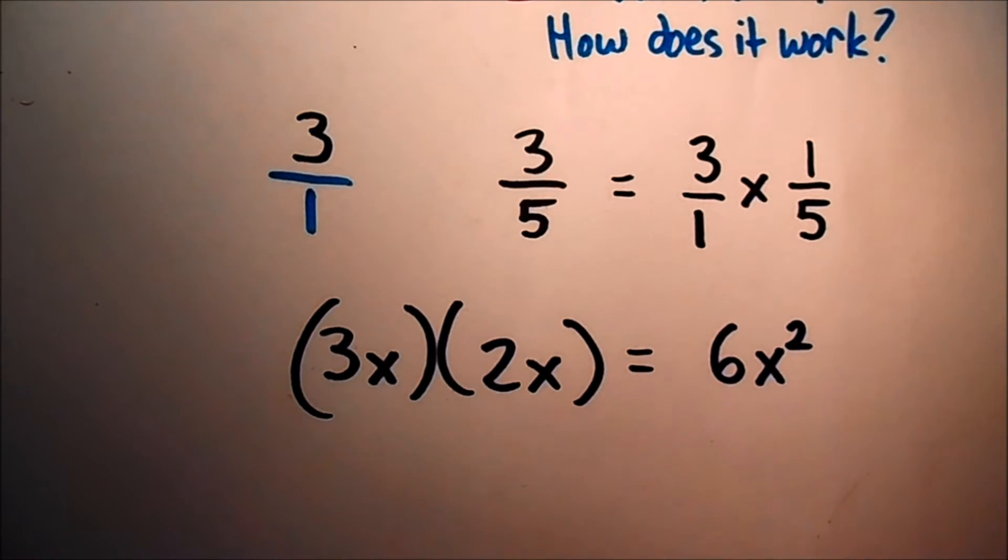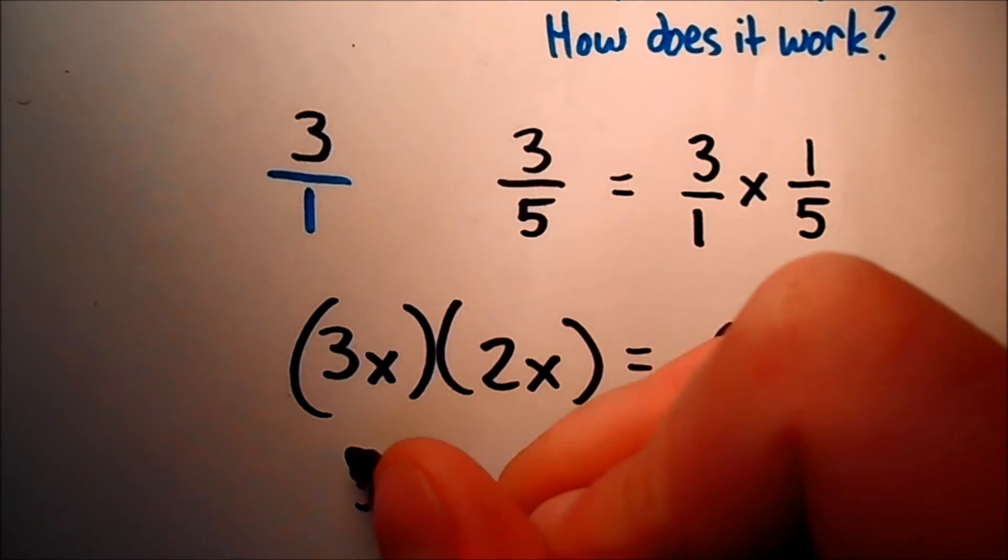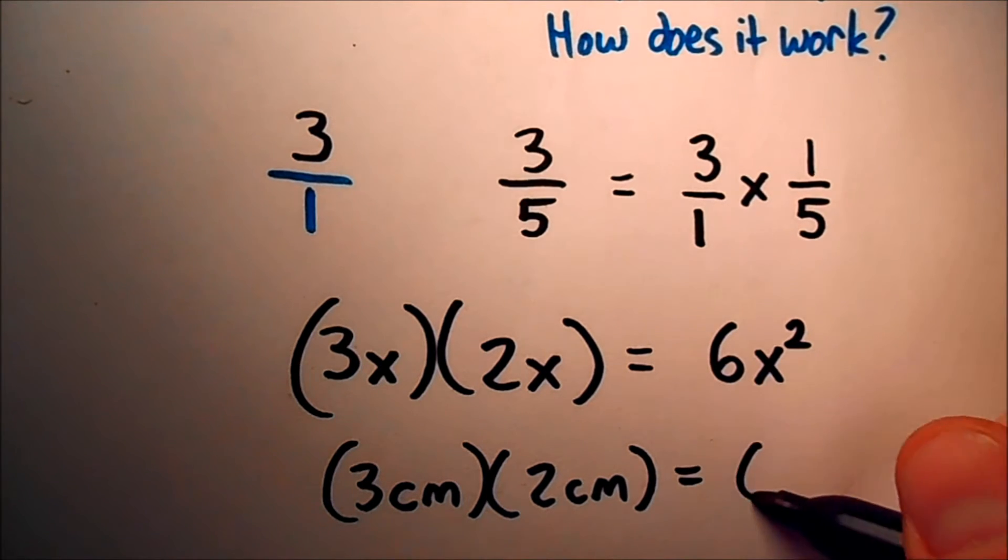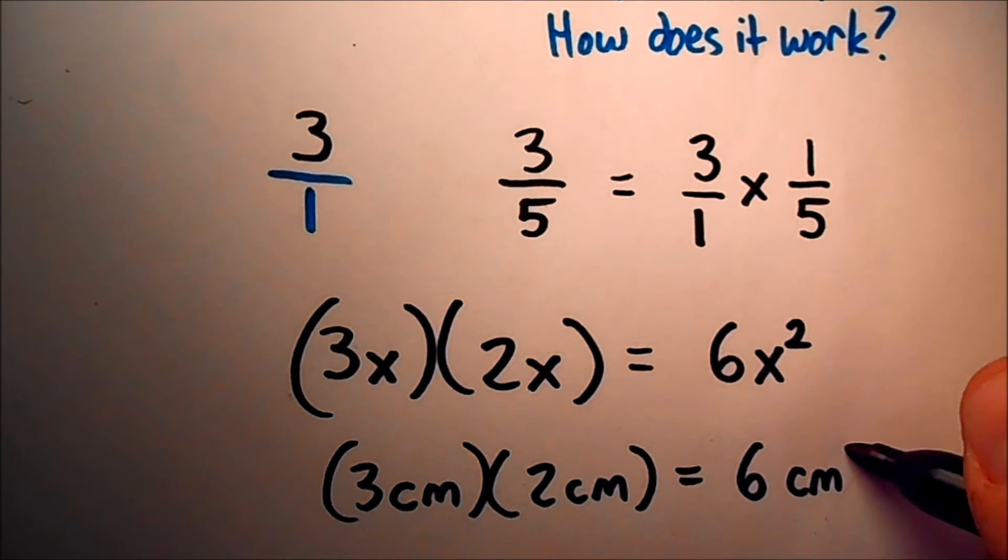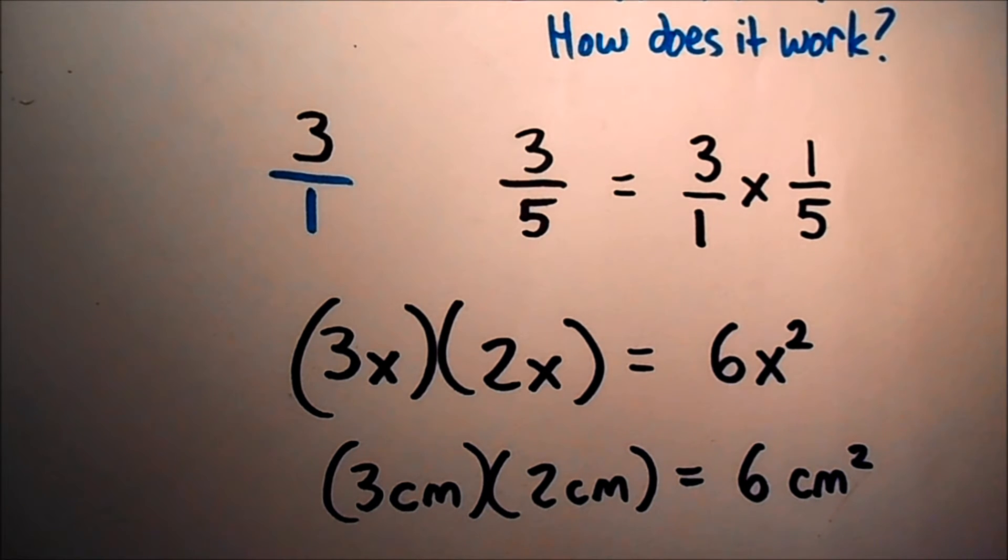Well units work the same way as well. If I have something that's 3 centimeters in length, and it's 2 centimeters in width, that equals 6 centimeters squared, and centimeters squared is an area rather than just being some other value of length. This is an actual area, square centimeters.